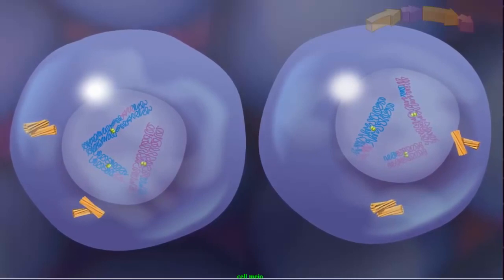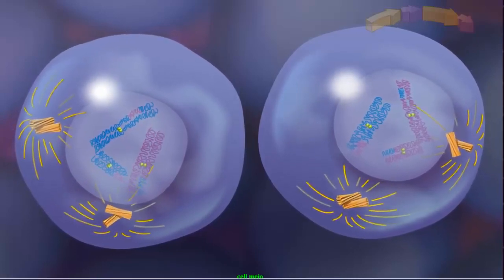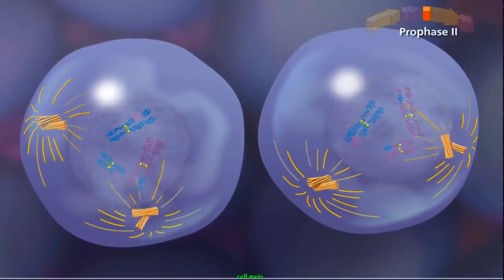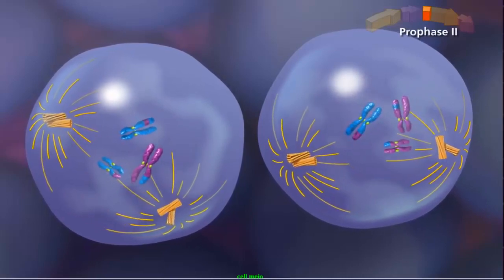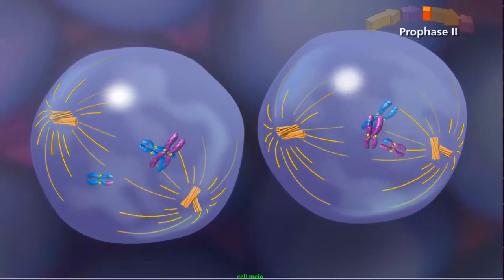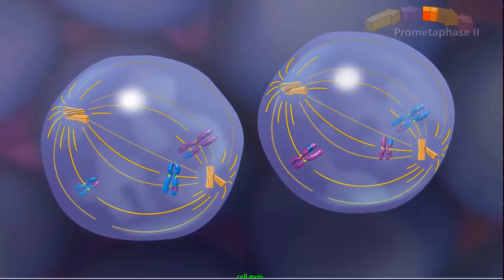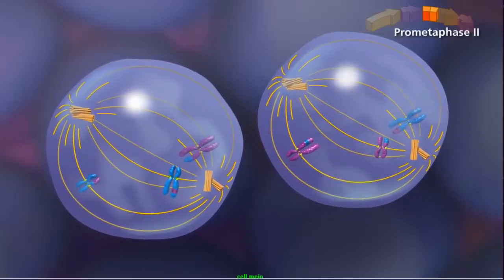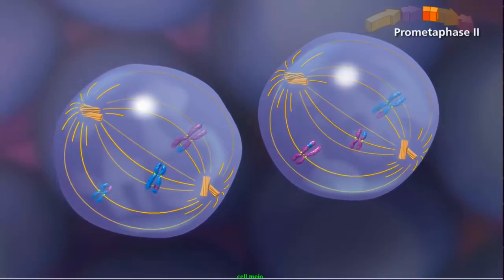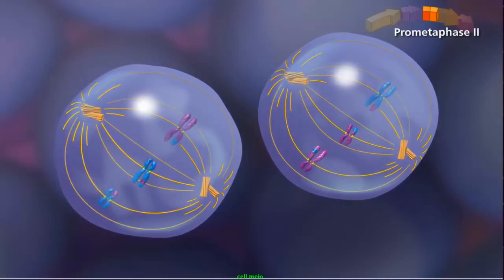Centrioles again duplicate and begin moving to opposite poles of each cell. In prophase II, the sister chromatids condense while the spindle starts to form as the nuclear envelope disappears. In prometaphase II, the sister chromatids attach to the spindle by kinetochore microtubules, with sister chromatids attached to opposite poles.